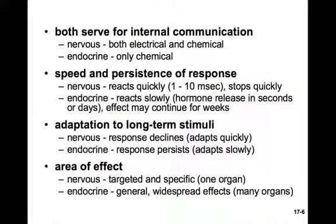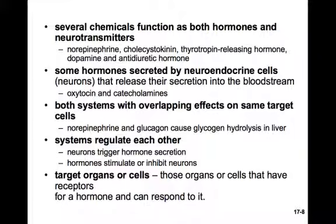When considering adaptation to long-term stimuli, the nervous system response declines very quickly, whereas the endocrine system response persists, adapting much more slowly. The nervous system is targeted to one specific place — a neuron drops its neurotransmitter at a specific location — whereas the endocrine system has widespread effects throughout the organ systems. Several chemicals function as both hormones and neurotransmitters, like norepinephrine, cholecystokinin, thyrotropin-releasing hormone, dopamine, and antidiuretic hormone. For example, norepinephrine released by the adrenal glands can have an instant effect on heart rate and a prolonged effect as it circulates throughout the body.